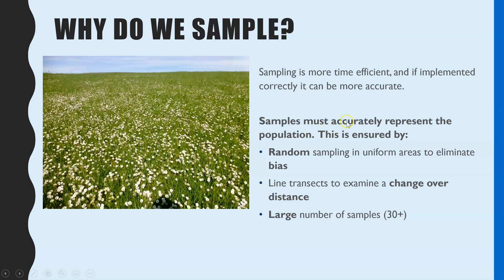To make sure your samples are accurately representing the population: if you have a uniform distribution of daisies, you would use random sampling — that's to avoid any bias, so you're not deliberately selecting areas. If you had an uneven distribution you would use a line transect, which is systematic sampling. Whichever you use, it has to be a large sample, and AQA typically says large is anything over 30, so just use 30 as your standard answer in an exam.